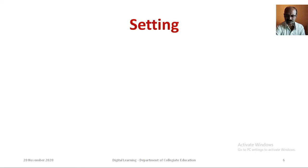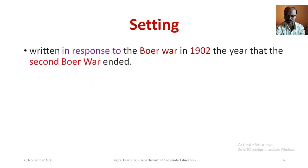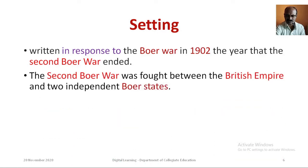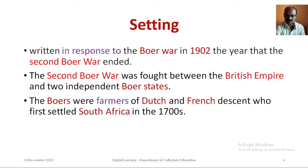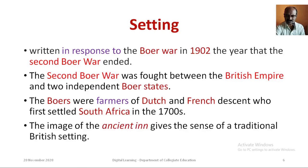Now we shall know the setting of the poem. 'The Man He Killed' was written in response to the Boer War in 1902, the year that the Second Boer War ended. The Boer War was a conflict between the British Empire and two independent Boer states. The Boers were farmers of Dutch and French descent who first settled in South Africa in the 1700s. The image of the ancient inn gives the sense of a traditional British setting.